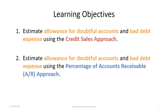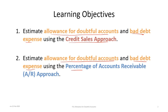There are two learning objectives for this tutorial. The first is to estimate allowance for doubtful accounts and bad debt expense using the credit sales approach, and the second is to do the same but using the percentage of accounts receivable, or AR, approach.